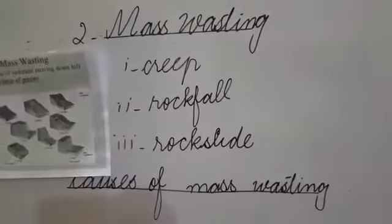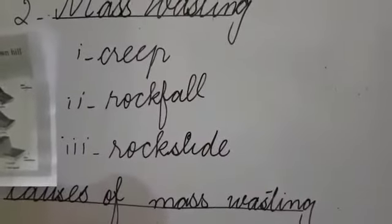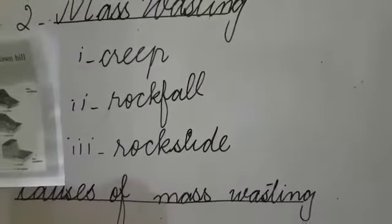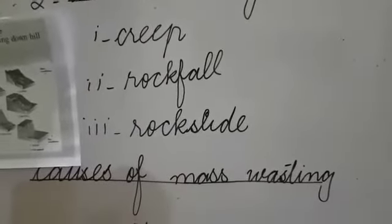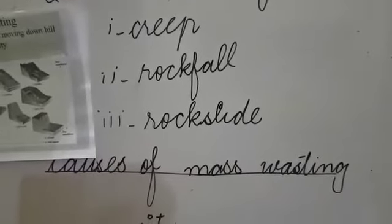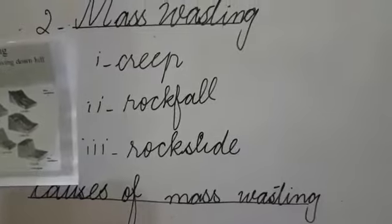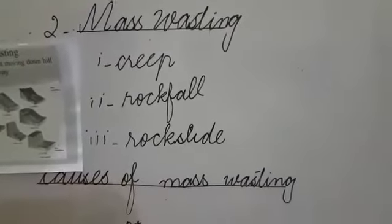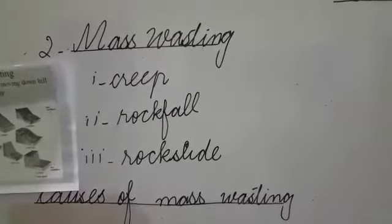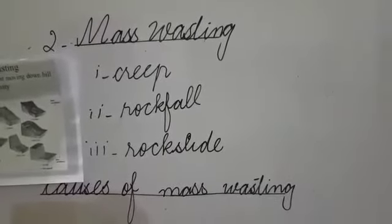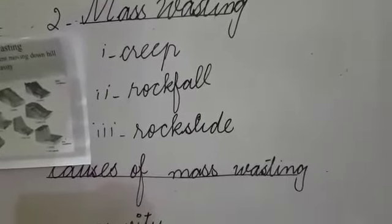There are three types of Mass Wasting. One is Creep, Rockfall and Rock Slide. What is Creep? It is the slow downward movement of rock fragment on a weathered slope. When a rock slowly moves downward from a slope, it is called Creep.